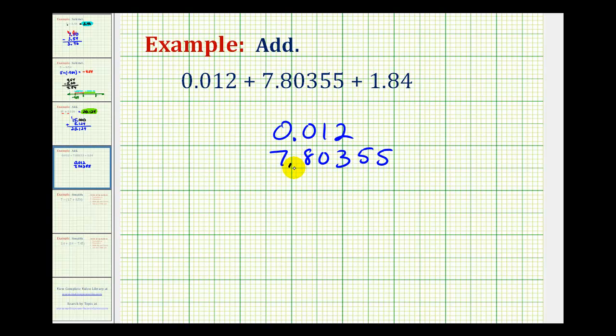Notice how we've lined up the corresponding place value. Here are the ones, tenths, hundredths, thousandths, and so on. And lastly, we have 1.84, so we'll have 1.84 here.